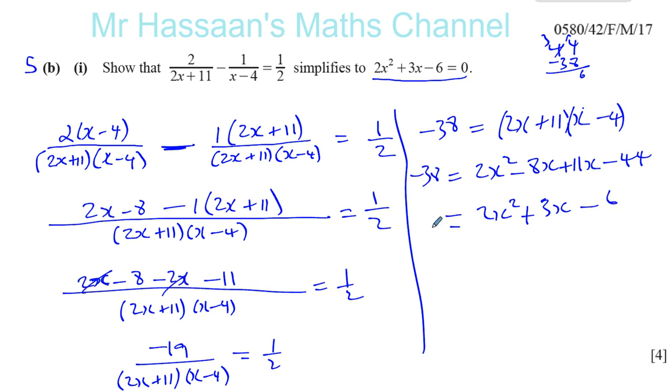And there we are. Got it. 2x squared plus 3x minus 6 equals 0. I think I have to restart my computer because things are lagging. So 2x squared plus 3x minus 6 equals 0, as required in the question.